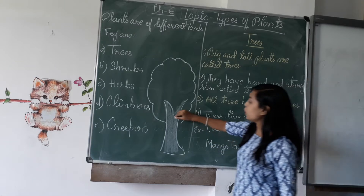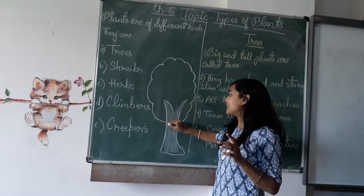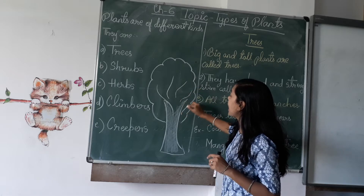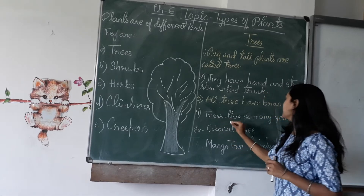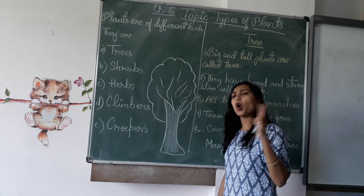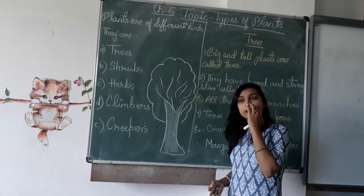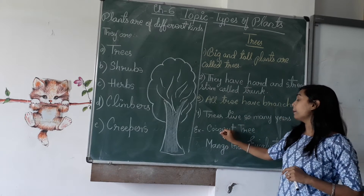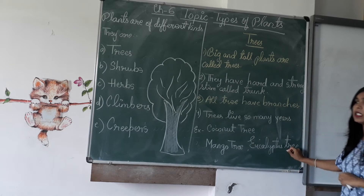All trees have branches. Trees live for so many years — they live easily for long, long years. For example: coconut tree, mango tree, and eucalyptus tree.